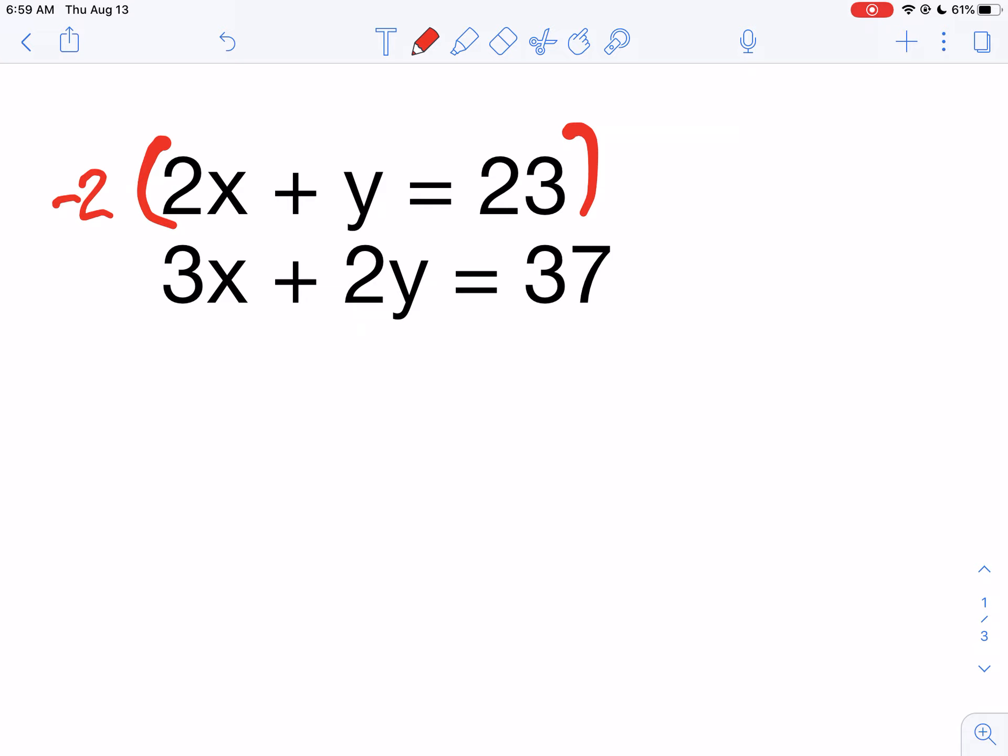And when I do that, then I'm going to write that below. So 2x times negative 2 is negative 4x. Negative 2 times y is negative 2y. 23 times negative 2 is negative 46.